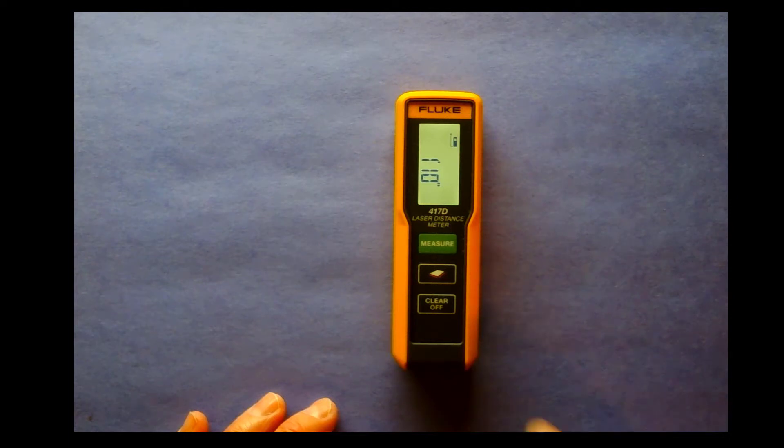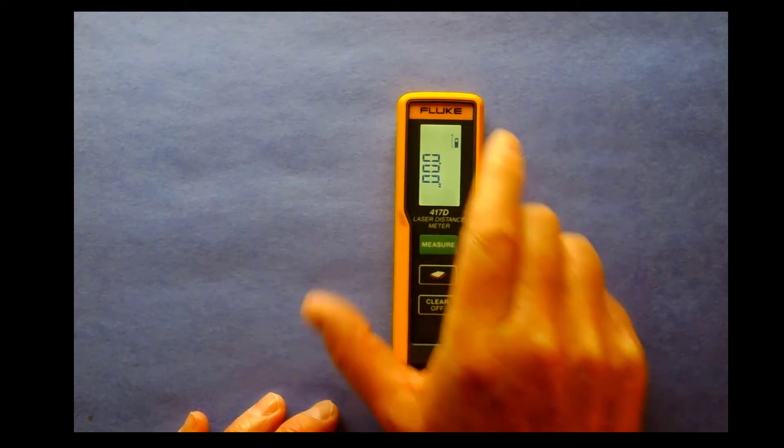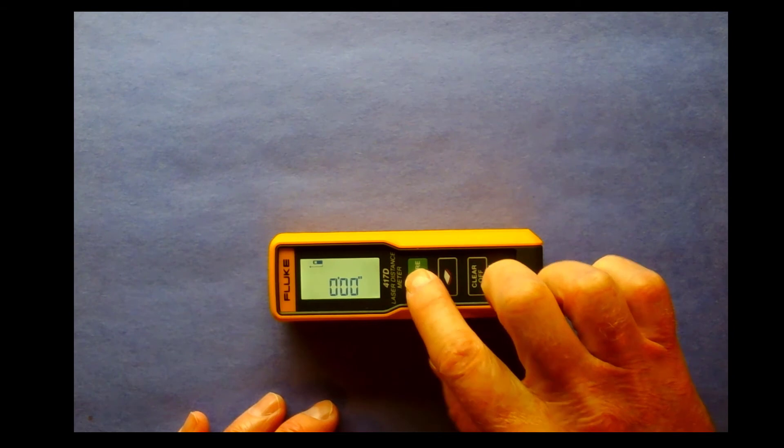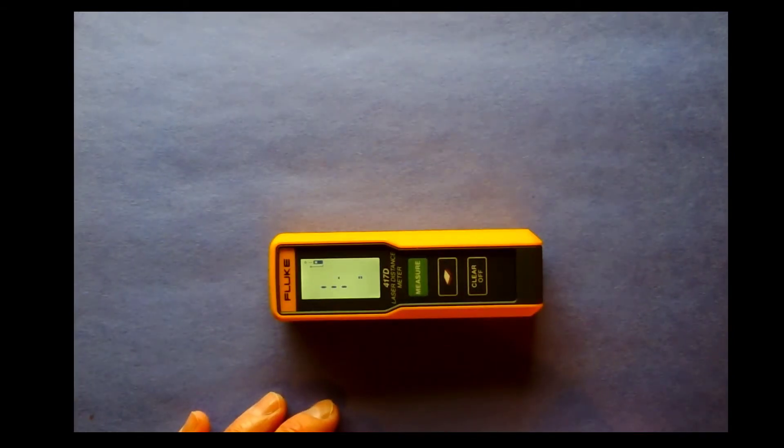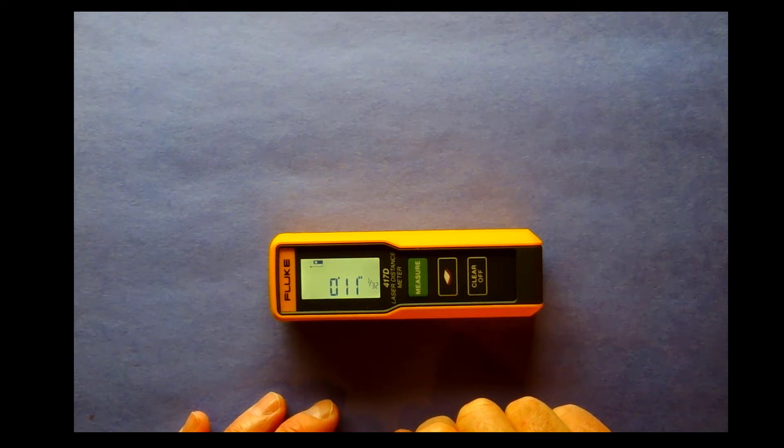To make another measurement, hit the clear button, adjust your meter, hit the measure button a second time, and it will give you that reading as well.